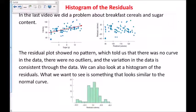First, a histogram of the residuals. In the last video we did a problem about breakfast cereals and sugar content. The residual plot showed no pattern which told us that there was no curve in the data, there were no outliers, and the variation in the data is consistent throughout the data. We can also look at a histogram of the residuals. What we want to see is something that looks similar to the normal curve.